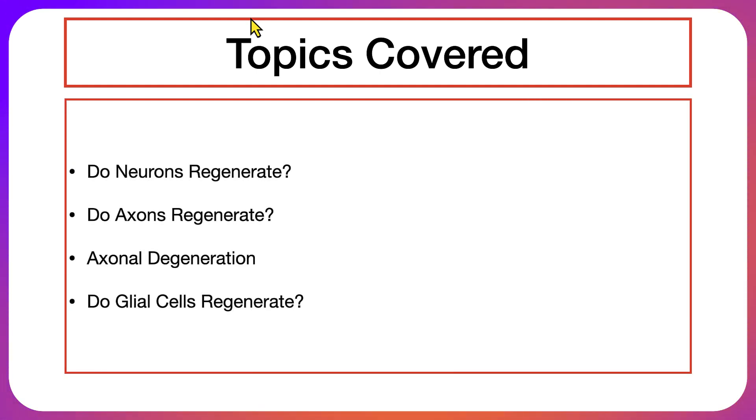Before we get into the content of this video, I want to first go over the overview of what topics we're going to cover. We're first going to answer the question as to whether neurons and axons regenerate. Then we're going to talk about axonal degeneration in detail, and we'll finish off this video by talking about whether glial cells regenerate.